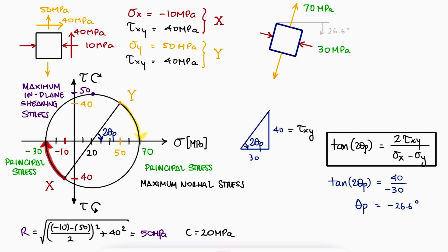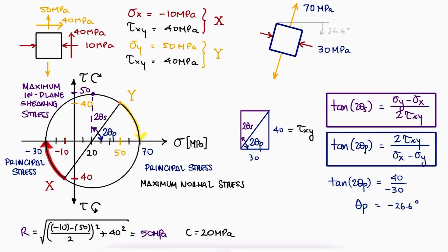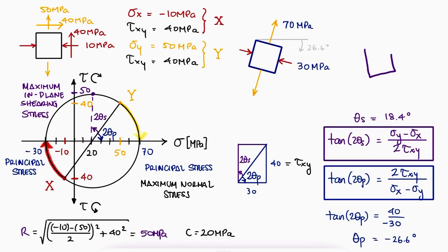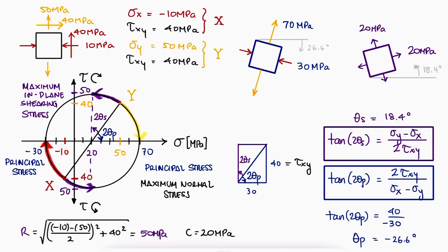The same process can be carried out to find the maximum shearing stress. The angle of rotation to find the maximum shearing stress could be found by using the reciprocal of our previous expression. A stress element rotated 18.4 degrees in the counterclockwise direction would show a positive stress of 20 MPa in both the x and y faces, and the maximum shearing stress possible. If we follow the y face, we would find a vector of 50 trying to make the stress element rotate clockwise, and following what used to be the x face, we would find a vector of 50 trying to rotate the stress element counterclockwise.